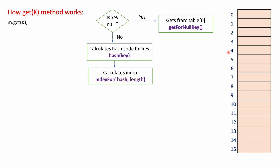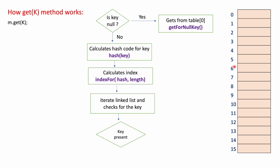If the key is not null, get() calculates the hash code, then calls indexFor() to find which bucket to check. It iterates the elements in that bucket and checks for the key using the equals() method. If the key is found, it returns the corresponding value; otherwise it returns null. The remove() method works similarly — it calculates hash code, finds the index, locates the key, and if found removes the node by updating the previous node's next pointer.